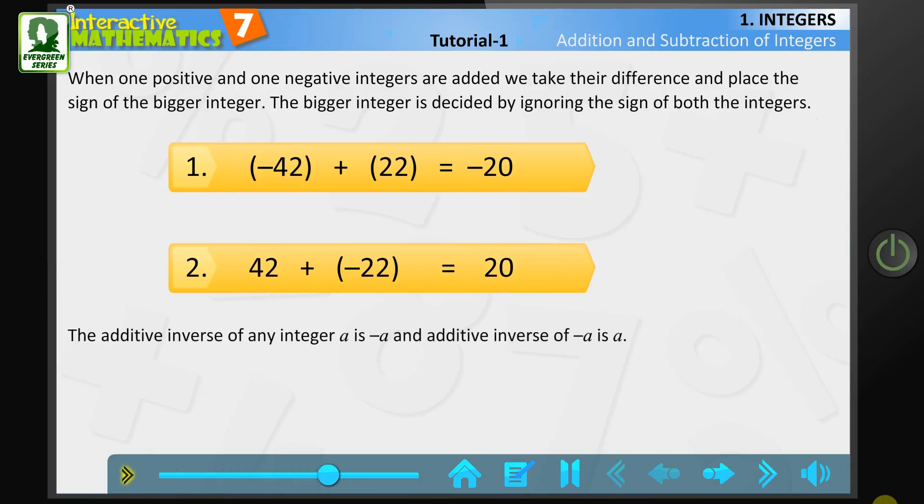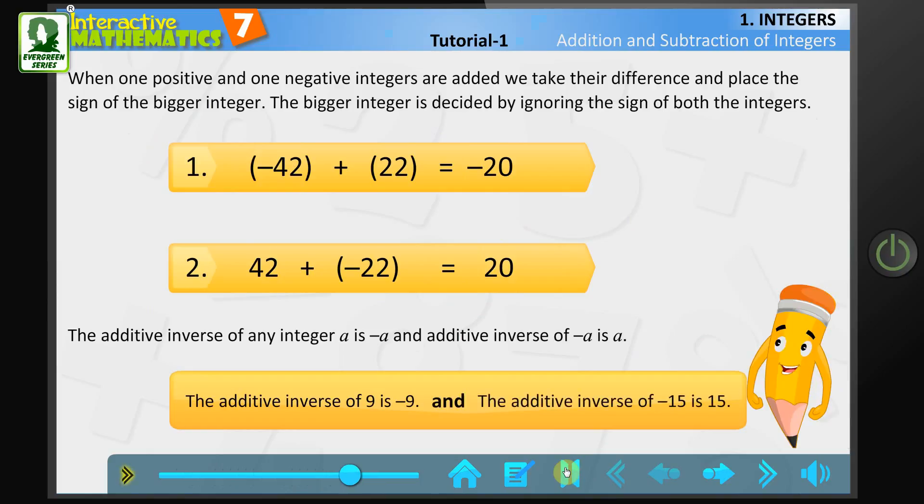The additive inverse of any integer a is -a, and the additive inverse of -a is a. For example, the additive inverse of 9 is -9, and the additive inverse of -15 is 15.